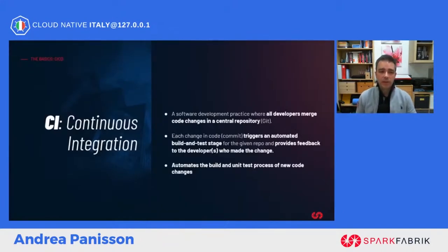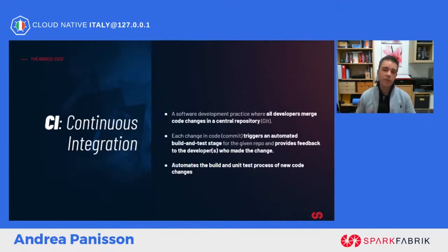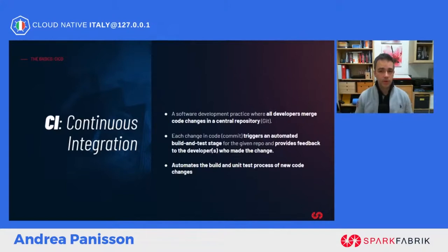What is Continuous Integration? CI is a software development practice in which all developers bring their code changes into a centralized, shared repository. Every code change, every commit or pull request triggers an automatic build and test procedure, with the goal of providing the developer immediate feedback on their implementation. With this method, developers can integrate small portions of finished code into the application multiple times a day, enabling rapid detection of issues.